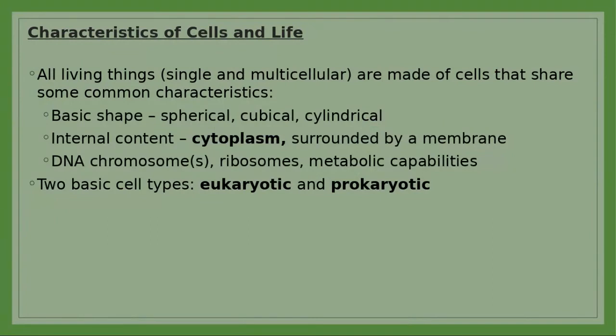All living things consist of cells. A cell is the smallest unit of life, and all living things have cells. Some organisms have only one cell — single-cell or unicellular organisms — and they are able to perform all five characteristics of life.